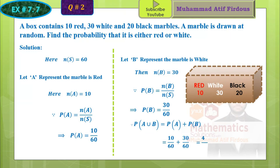Probability of A is 10 over 60 and probability of B is 30 over 60. Taking LCM, we get 30 plus 10 over 60, which is 40 over 60. Simplifying, the answer is 2 over 3. This is the probability that the marble drawn is either red or white. How simple was that question? This is just the basics.